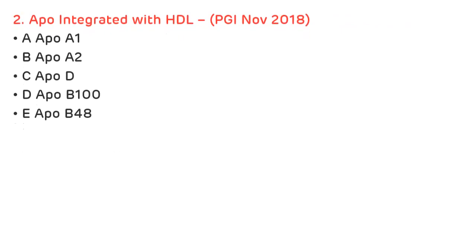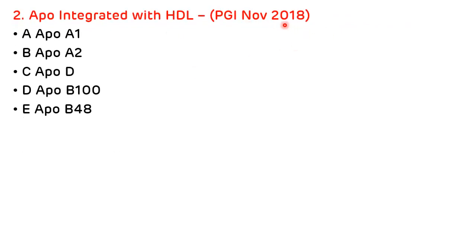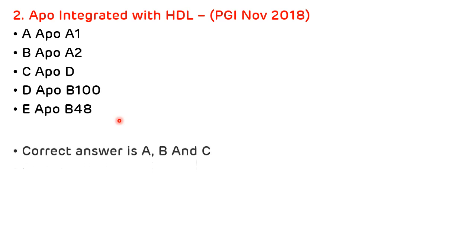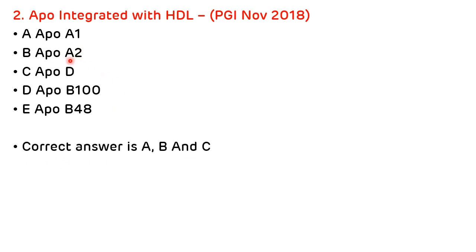Second question, asked in PGI November 2018: Which apoproteins are integrated with high density lipoprotein? The options are ApoA1, ApoA2, ApoA4, and combinations. The correct answer is A, B, and C — that is ApoA1, ApoA2, and ApoA3.